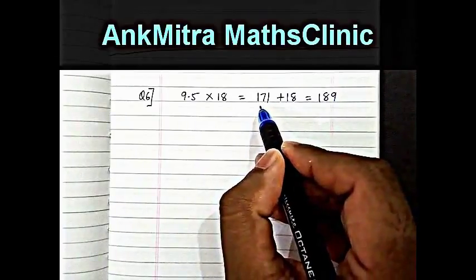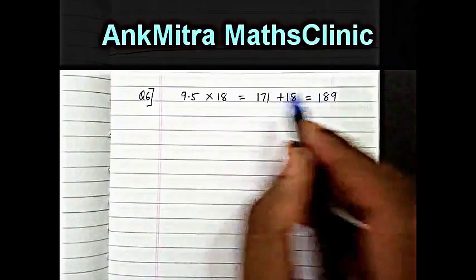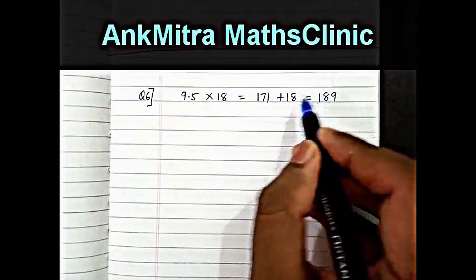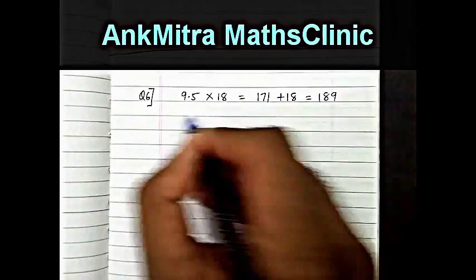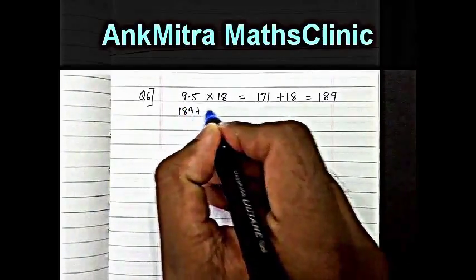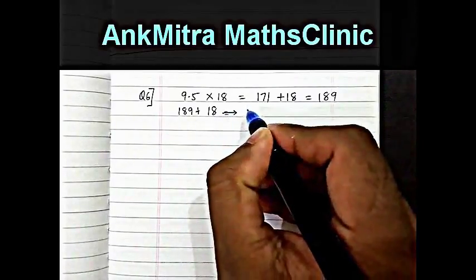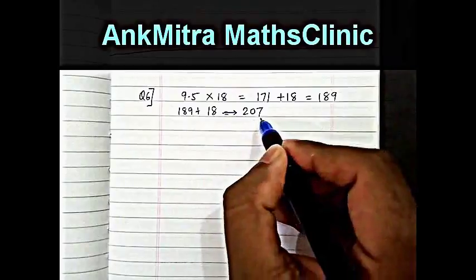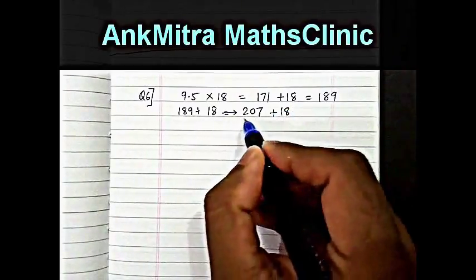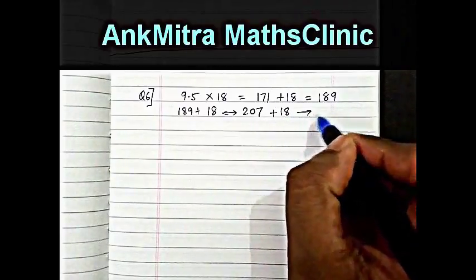Neither is 171 a perfect square nor is 189 a perfect square, so we will keep on adding 18 to this until we reach a perfect square. Next possible will be 189 plus 18 which comes to 207. Then 207 plus 18 will be the next. 207 is not a perfect square, so 207 plus 18 will give us a sum of 225.